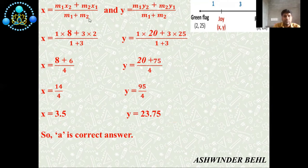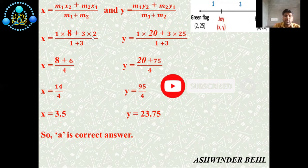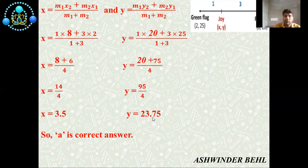Now we can apply the section formula. X = (1×8 + 3×2)/(1+3), and Y = (1×20 + 3×25)/(1+3). For X, (8+6)/4 = 14/4, which gives us 3.5. For Y, (20+75)/4 = 95/4. If we divide 95 by 4, we get 23.75. So A is the correct answer.